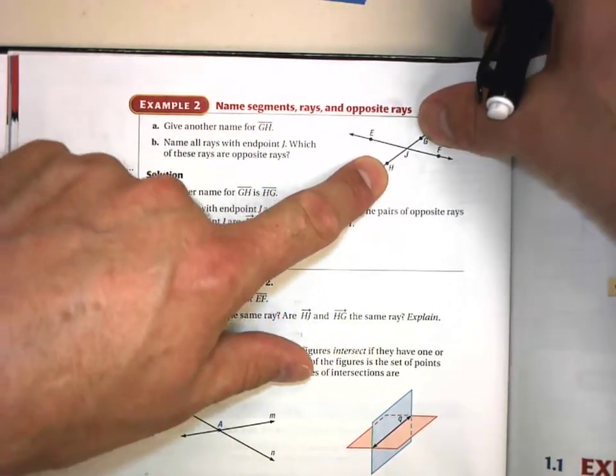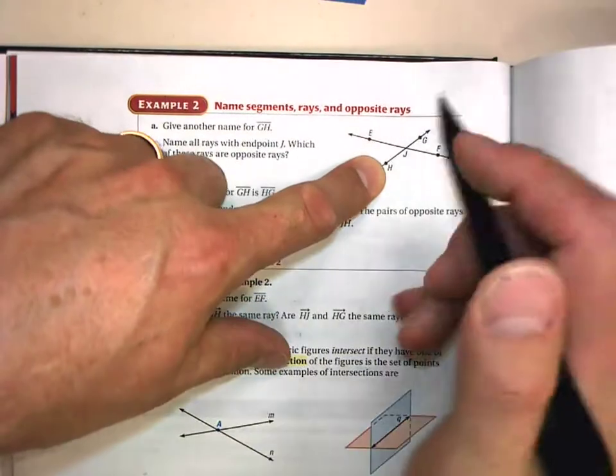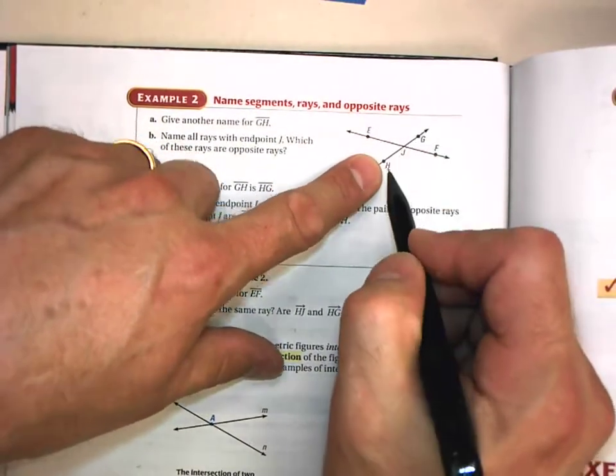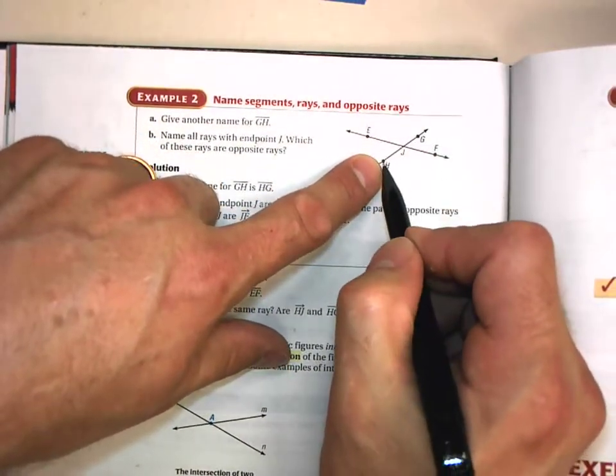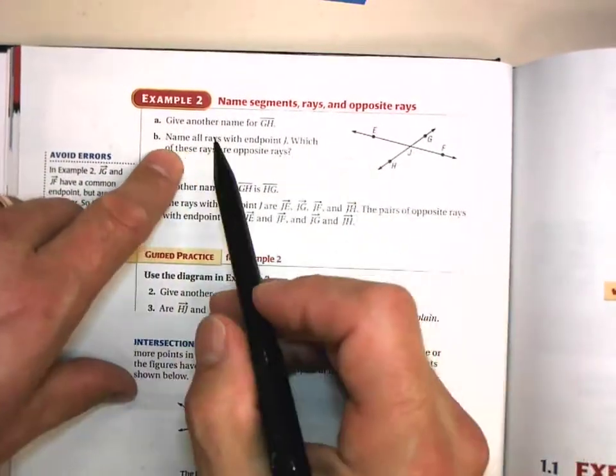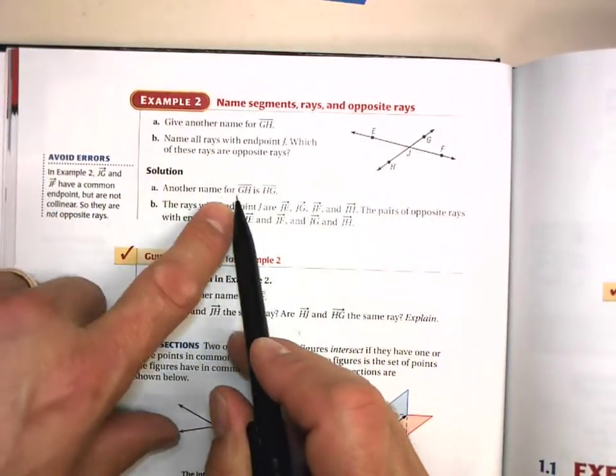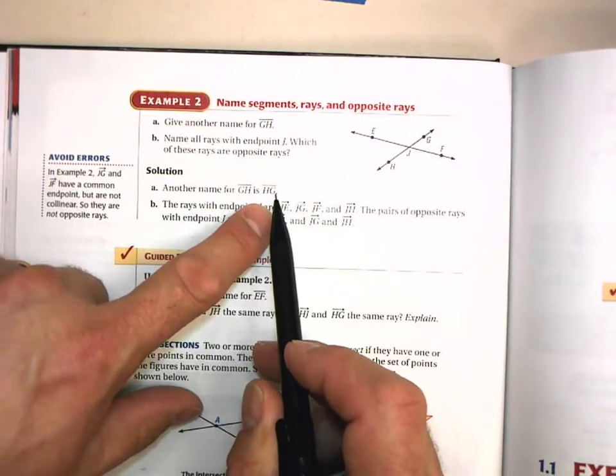So what's the other option? What's another name for that same segment? Well, remember the order does not matter. So we could say segment HG. That would also work. And that's what they say down here. Another name for segment GH is segment HG.